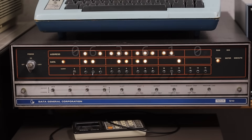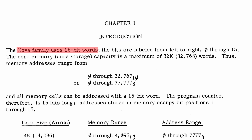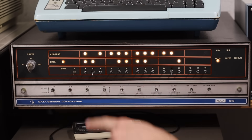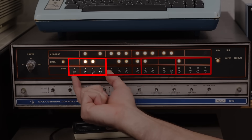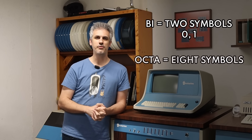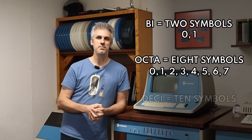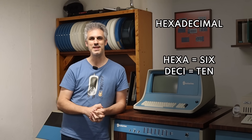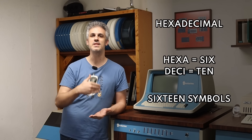But there is one fatal flaw going on here, and that is that octal is not a power of 2. This Data General Nova is a 16-bit machine. But if we're clumping those bits into groups of 3, we end up with this single lone switch all the way out here on the end. But what if we could group the switches into collections of 4? Then we would have a perfect division all the way across. And this is hexadecimal.